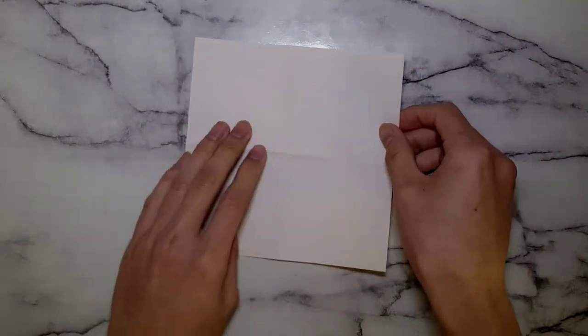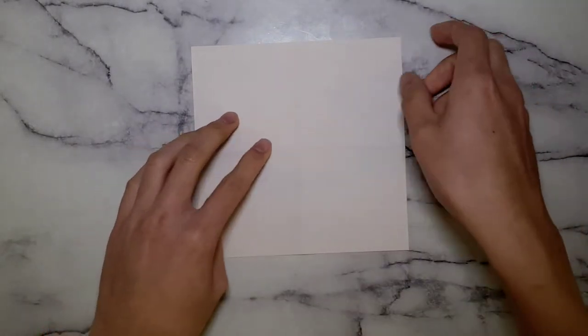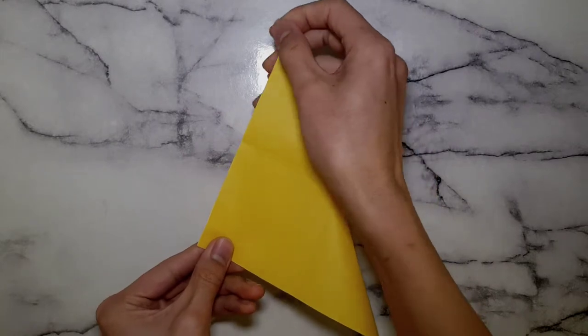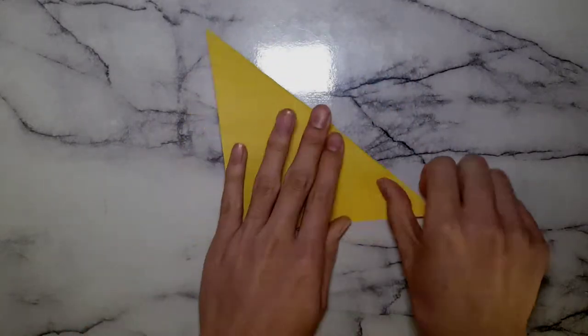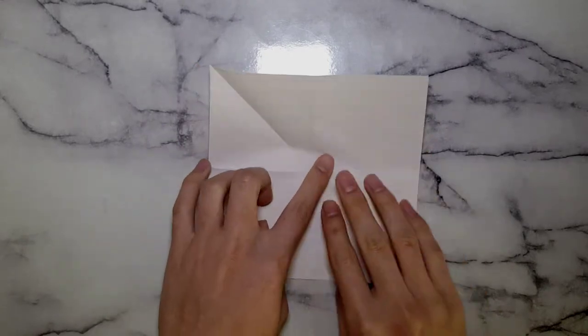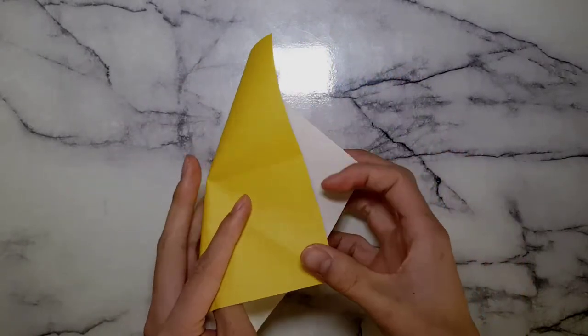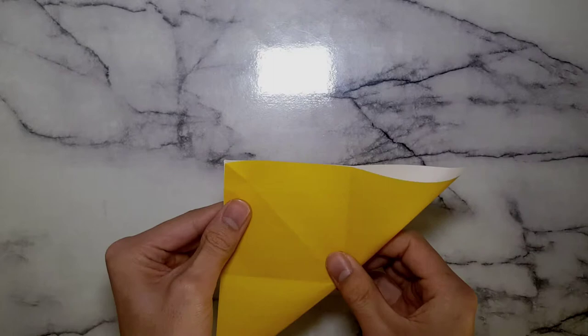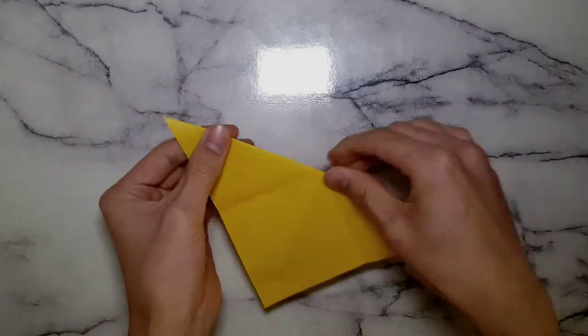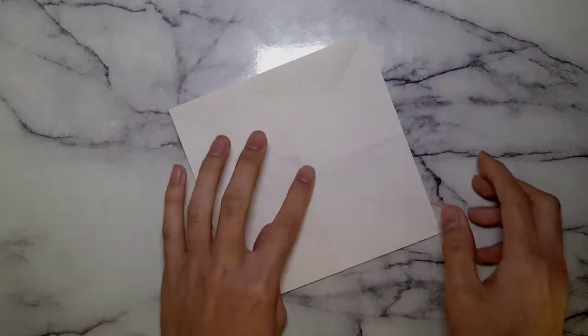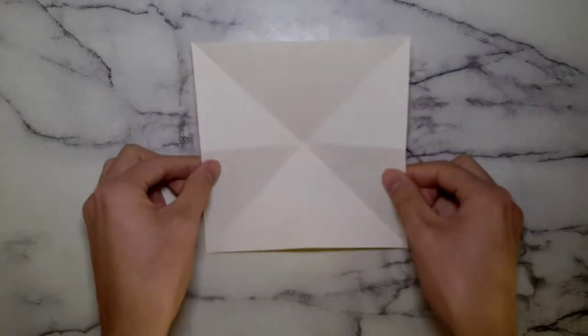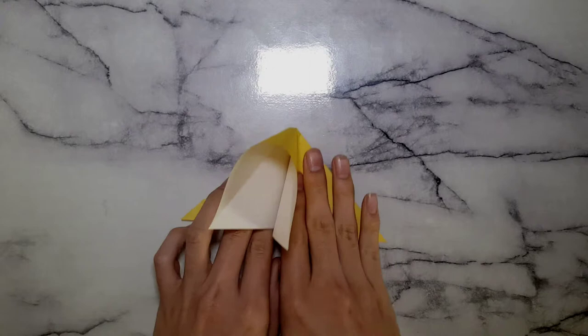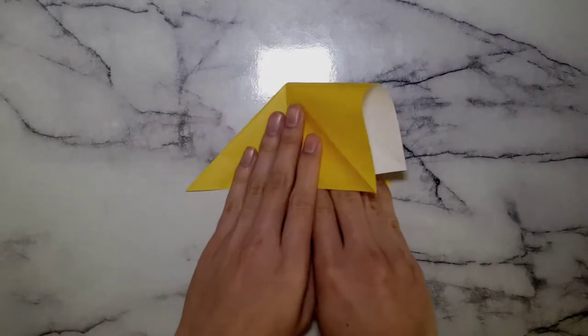Once we've done that, we're going to flip it over and we're going to fold it diagonally in both directions. Now we've done that, just push the middle out and it should kind of pop up. And from the two sides, we're going to push it in and then flatten it down. And it should start looking like a triangle.